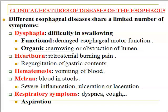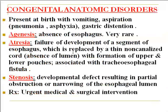Melena is associated with severe inflammatory process, ulceration, or laceration. The fifth symptom is respiratory symptoms, because the esophagus is adjacent to the bronchial tree. Regurgitation from the esophagus to the respiratory passage may result in dyspnea, cough, and aspiration. Congenital disorders present at birth with vomiting and aspiration; any defect in the esophagus is reflected toward the respiratory passage, potentially resulting in asphyxia pneumonia and gastric distension.